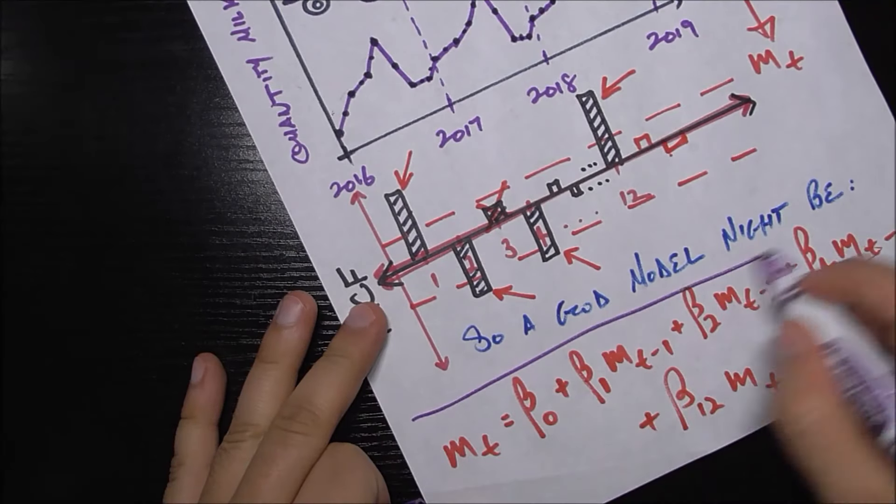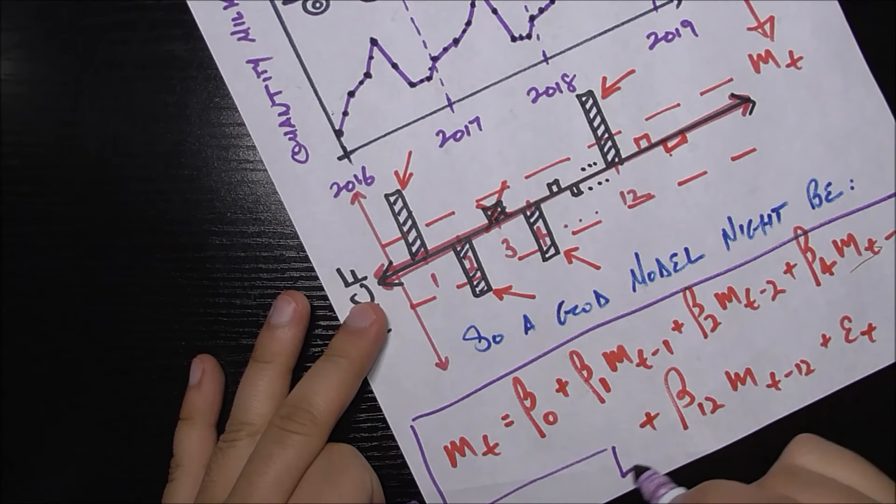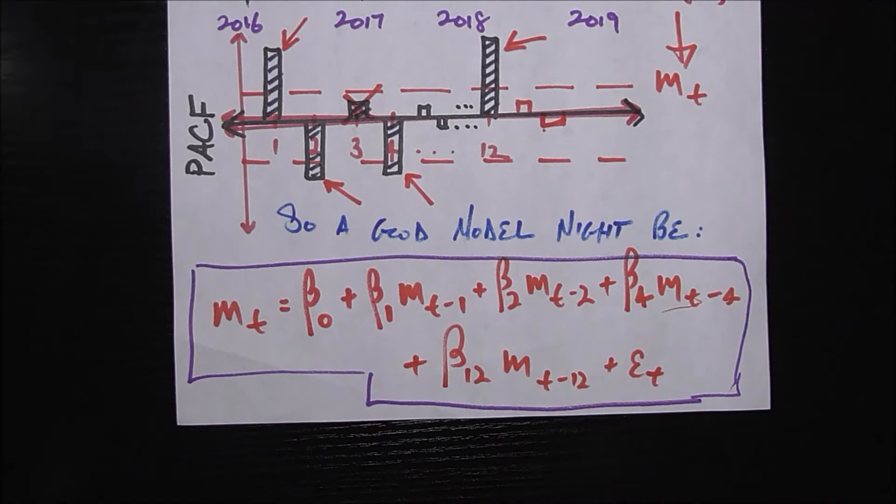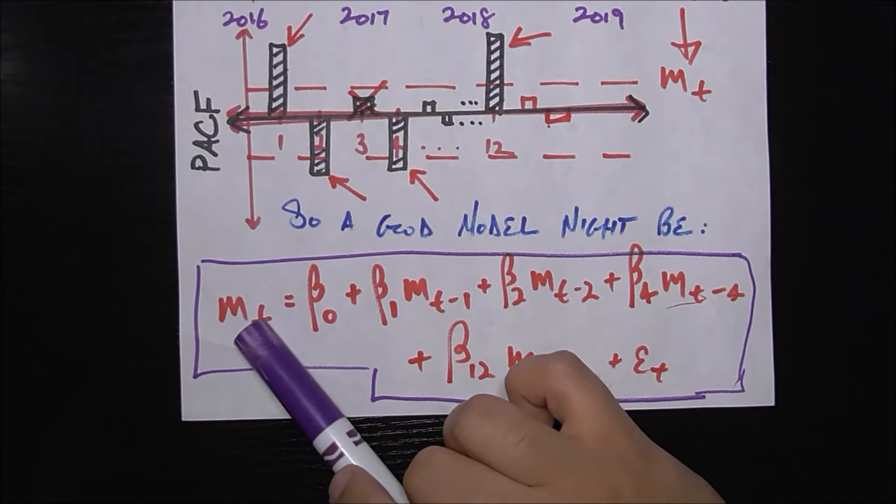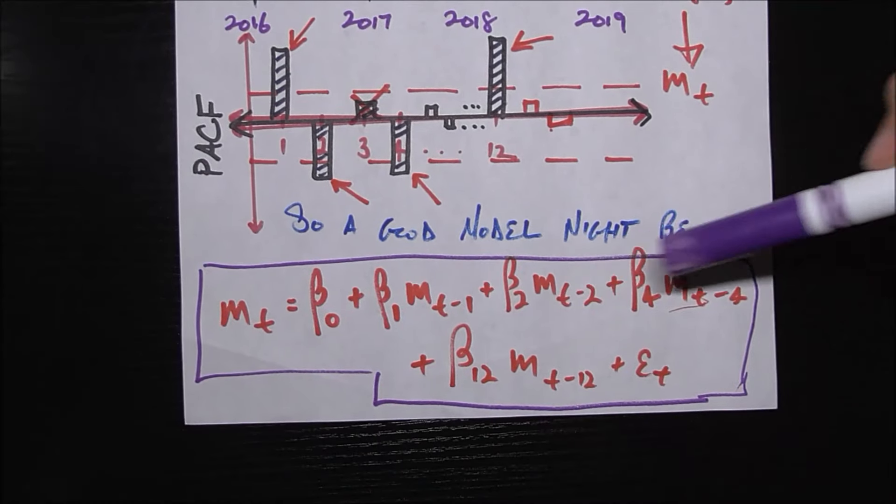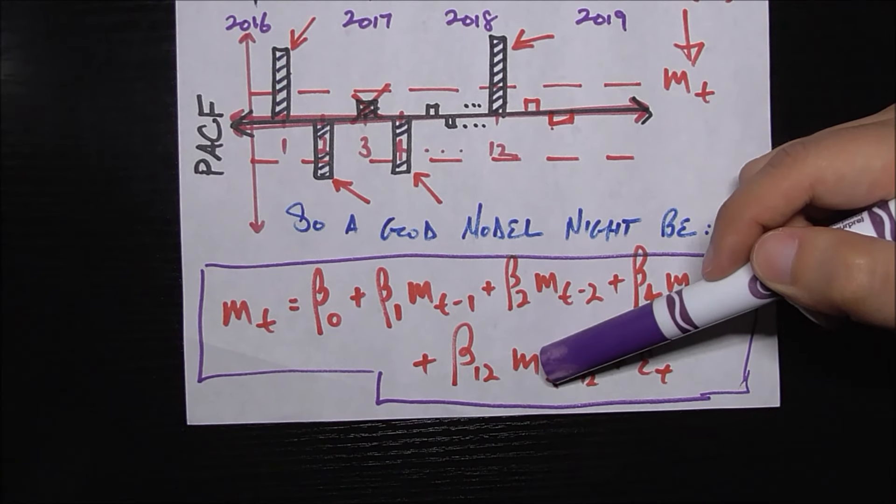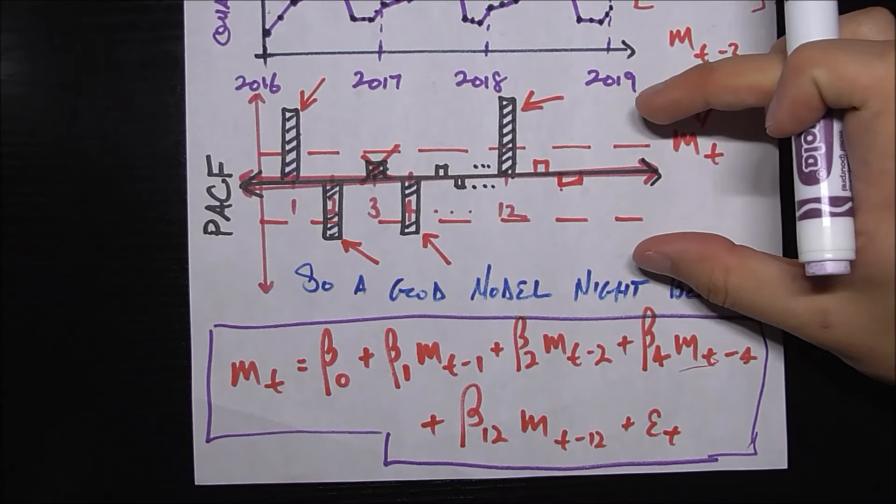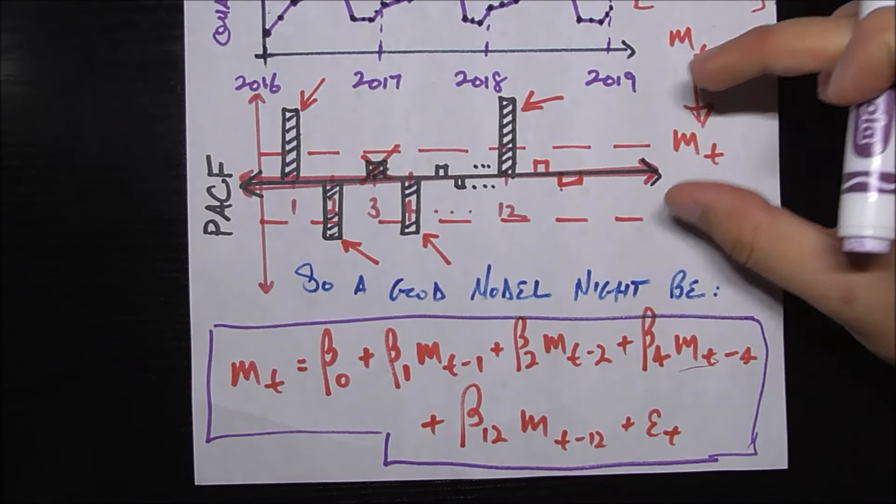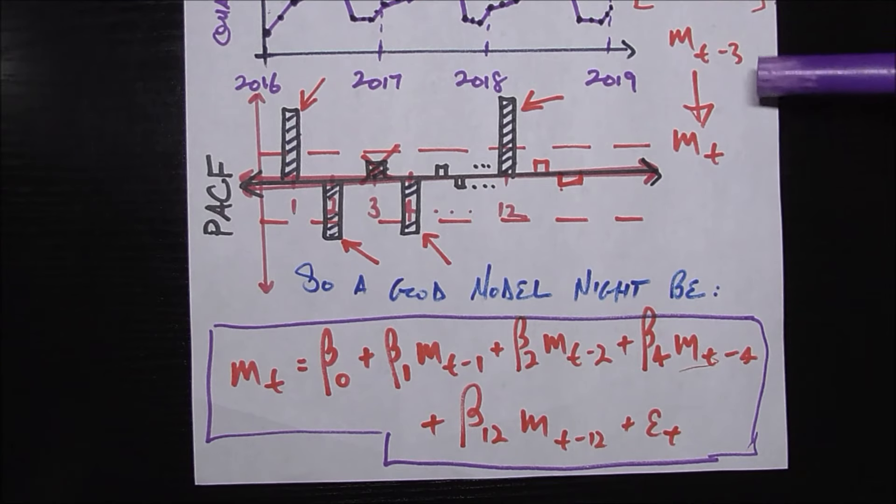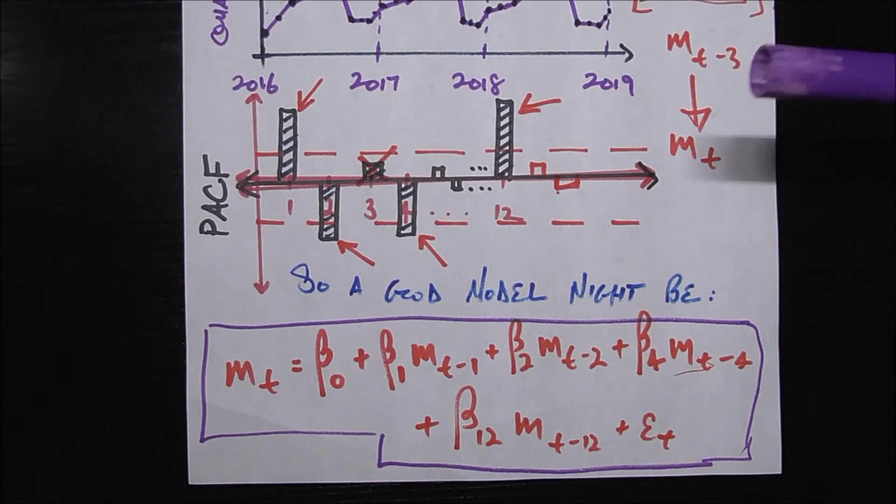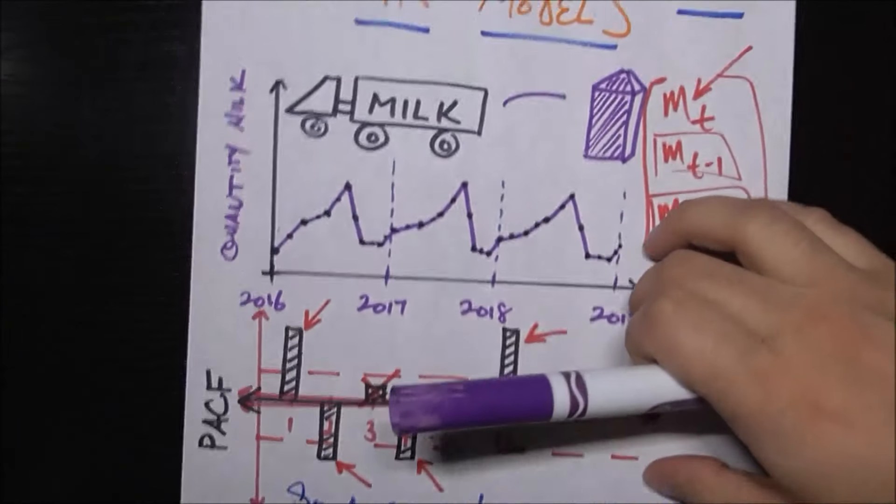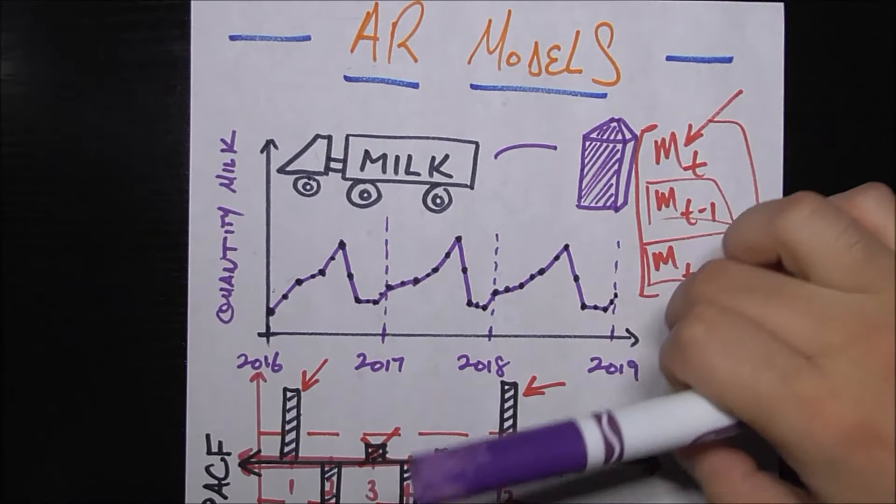So based on our evidence, this could be a good model to help us predict the quantity of milk demanded today based on the quantity of milk demanded a month ago, two months ago, four months ago, and 12 months ago. And we deduce that based on the PACF plot, which again is just measuring the direct correlation of the quantity of milk some number of lags ago on the quantity of milk today.